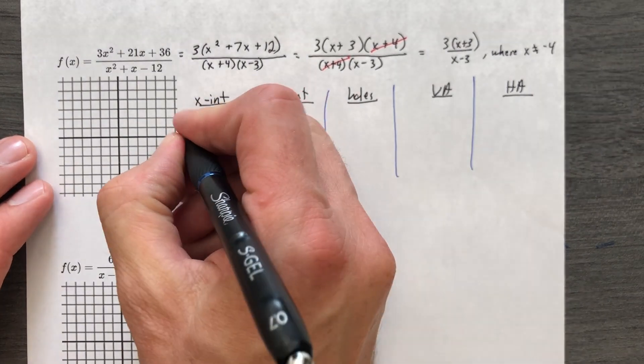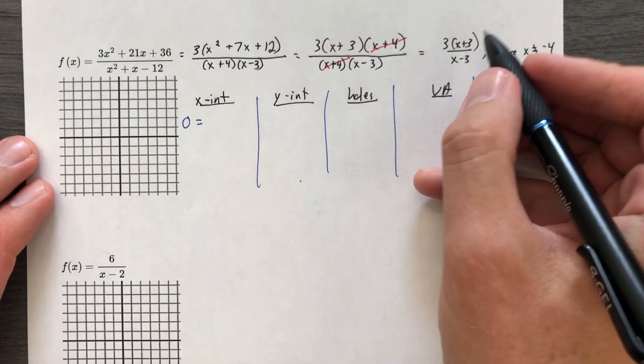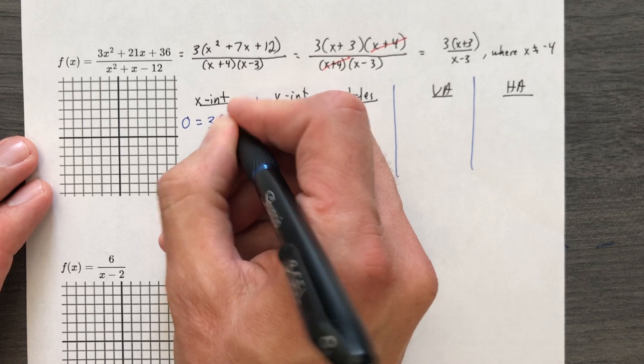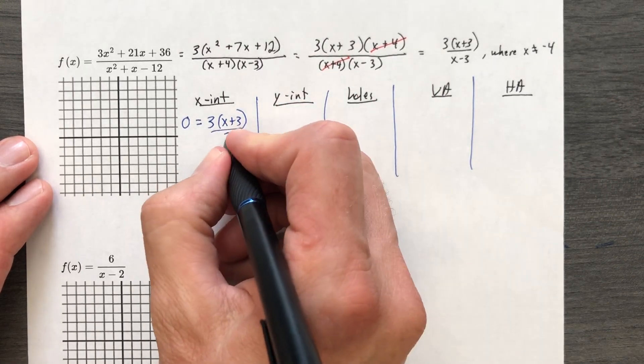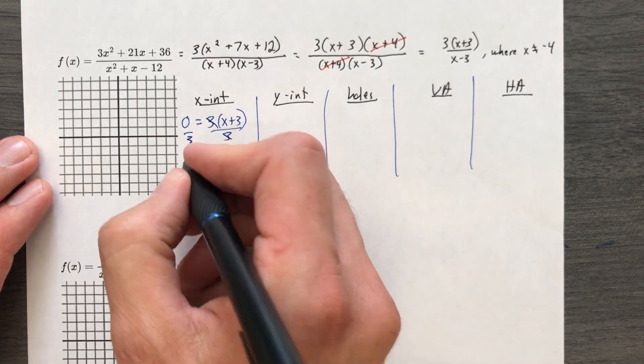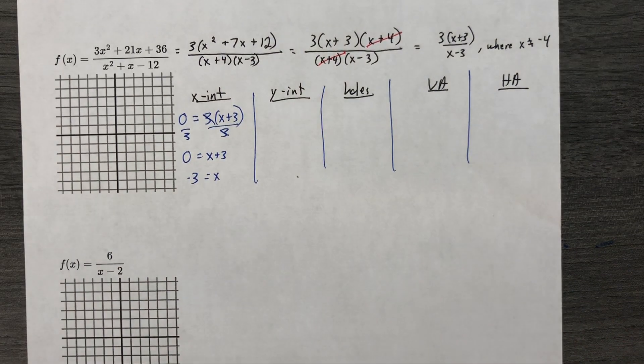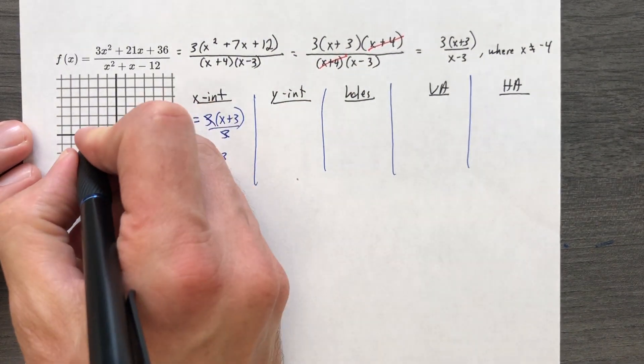What we're going to do is say 0 equals, I would say all that stuff, but we just found a shortcut where it's really just the numerator. You divide by 3, cancel, cancel. 0 equals just that factor, so x equals negative 3. Yay! We now have an x-intercept.